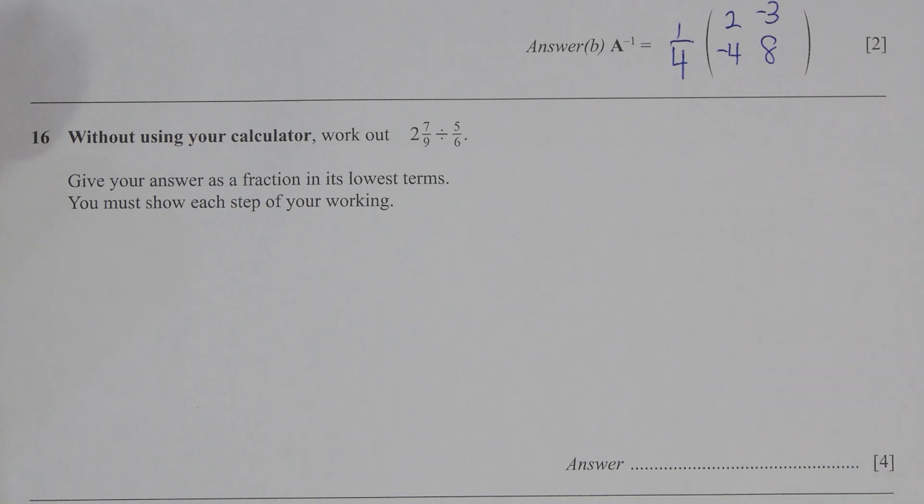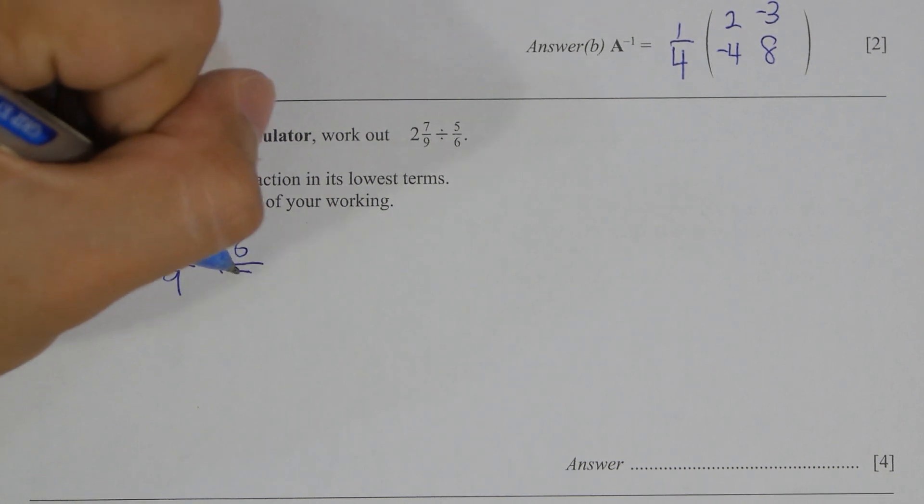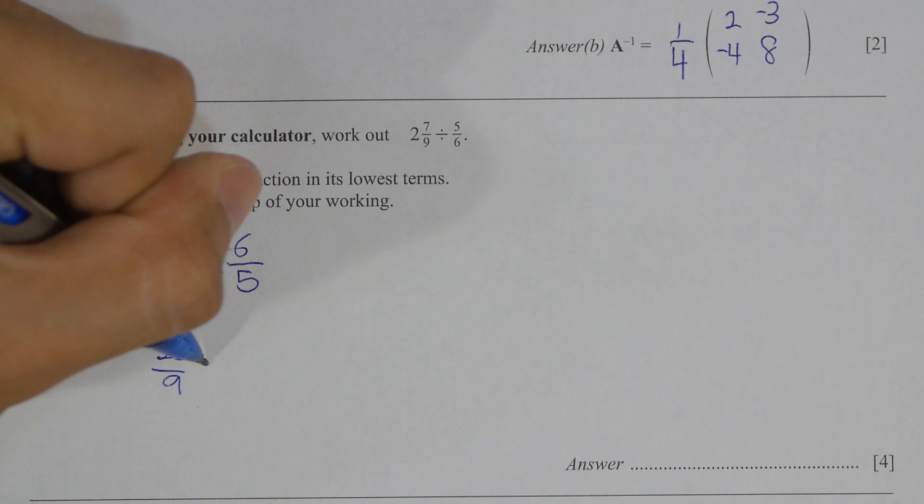Pretty straightforward. Change the proper fraction into improper ones first. Then do the shifting and calculation and the final answer will actually be 3 1 over 3.